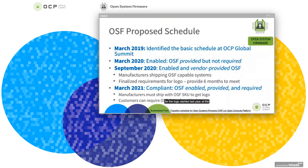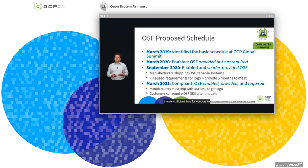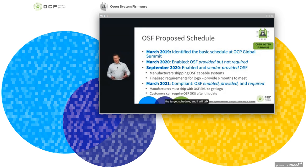The proposed schedule started last year at the Global Summit, where we identified a basic schedule for achieving this. In March this year, we are talking about our current status to provide all components needed for the OSF logo. We're expecting in September 2020 that the ingredients will be available to system vendors so they are capable of shipping OSF systems. At that time, we're looking to finalize the logo requirements so there's sufficient time for vendors to produce fully compliant systems. By this time next year, we expect OSF-enabled capabilities to be available and required, so CSP or hyperscale customers wanting to purchase OSF-enabled systems can do so.